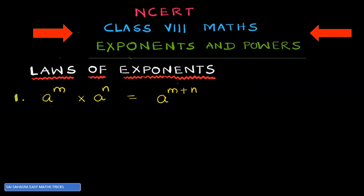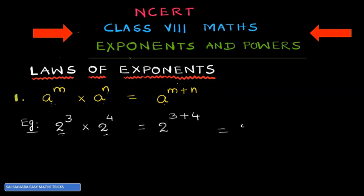Example to apply this formula: 2 raised to the power of 3 multiplied by 2 raised to the power of 4. This is in the form of a^m into a^n, where a is 2, m is 3, and n is 4. Since the base is 2 in both terms, we take the single base 2 and add the exponents: 3 plus 4 equals 7. So the result is 2 raised to the power of 7.